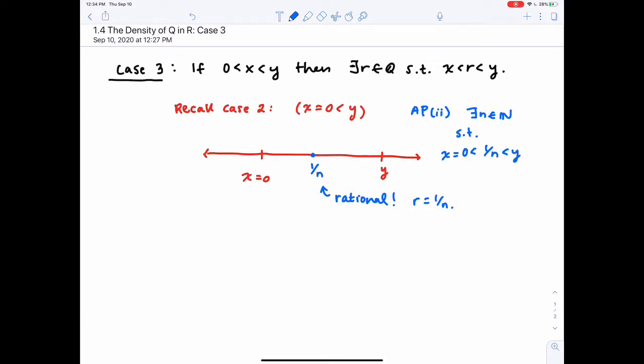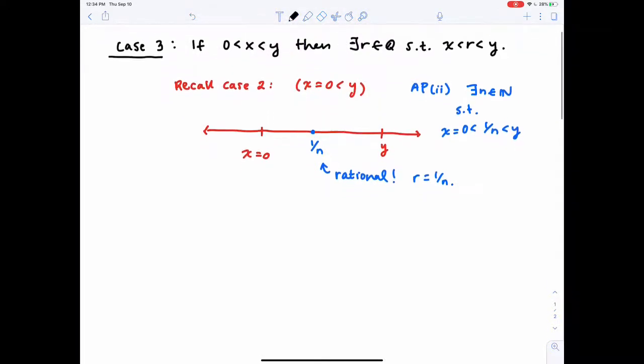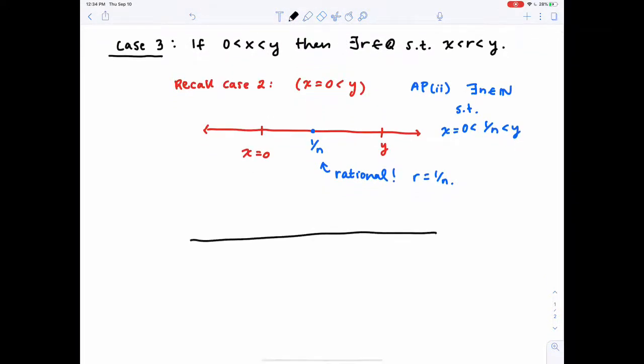Now, when I move to case 3, we have the following picture. I've got 0 right here, but now x and y are floating off somewhere else on the number line. Maybe they're there. I don't know how far apart exactly they are. I just know that both of them lie to the right of 0, and I'm making the assumption that y is further right than x.